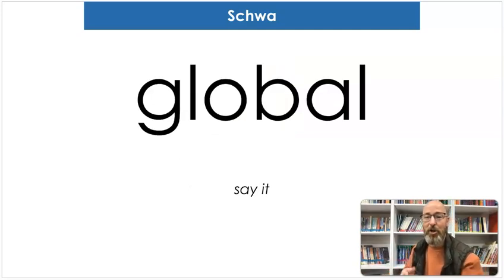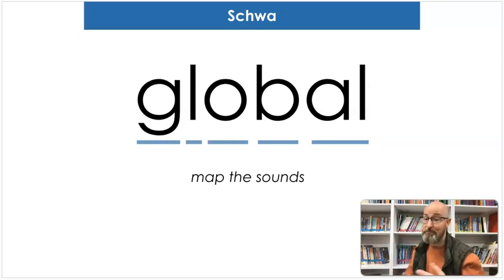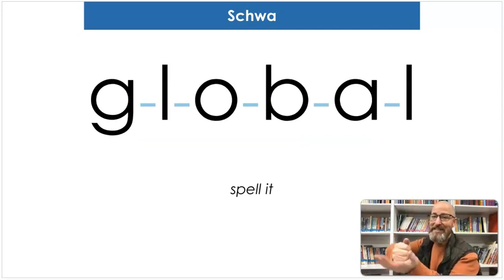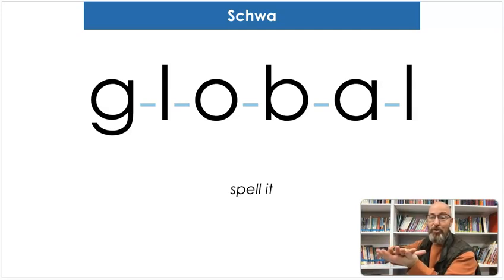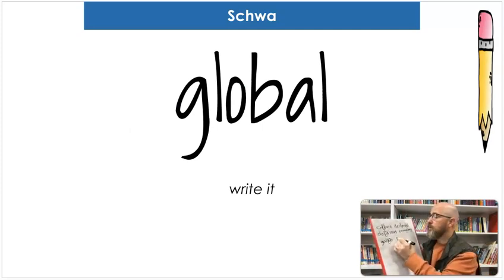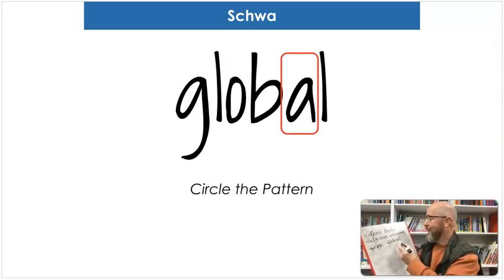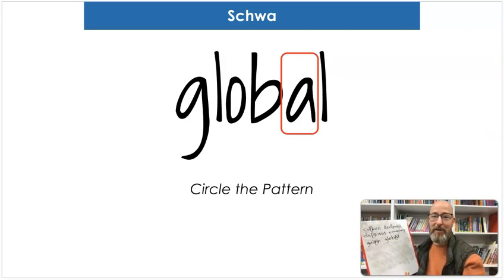Our next word is 'global.' Say global. Map the sounds: G-O-L-O-B-L. Global. Did you find it? Spell it: G-L-O-B-A-L. Global. If something is global, it's all over the whole earth — it's around the whole globe. Let's write it: G-L-O-B-A-L. Where's the schwa? In the A — that's right. Global.